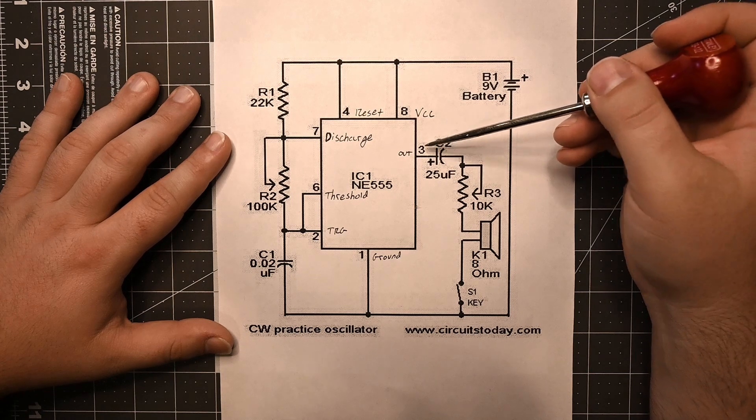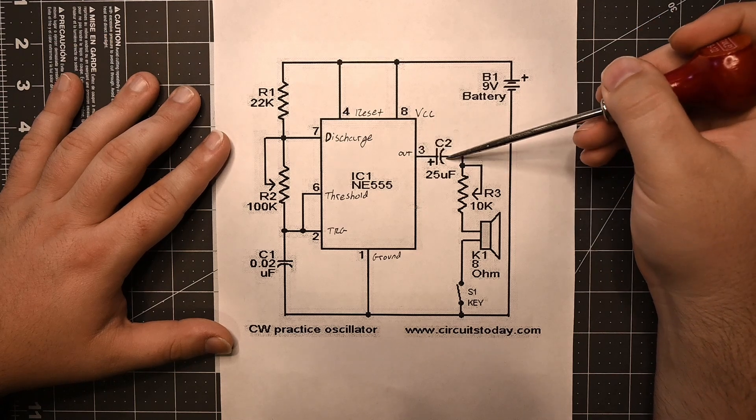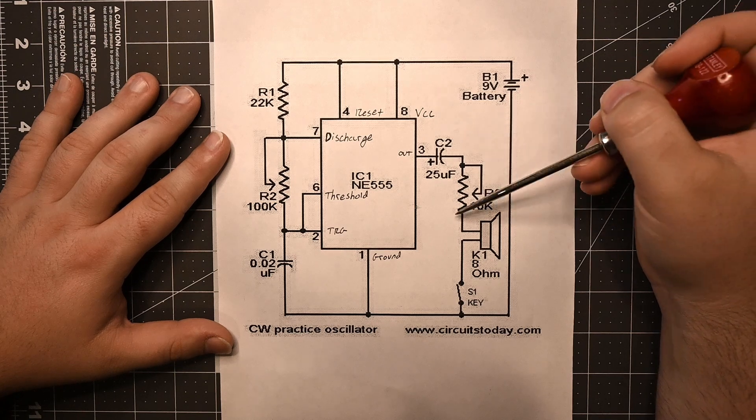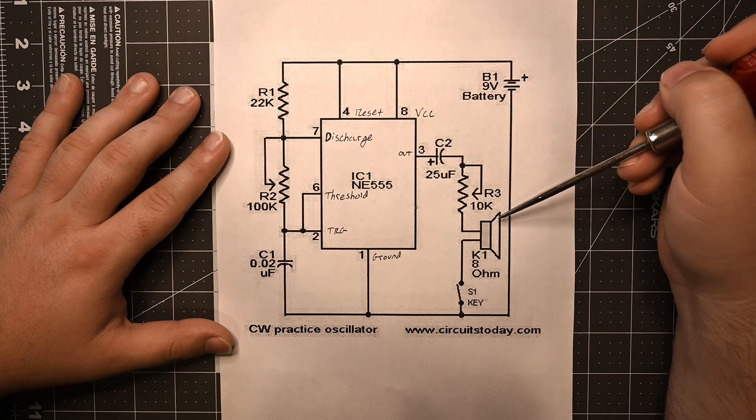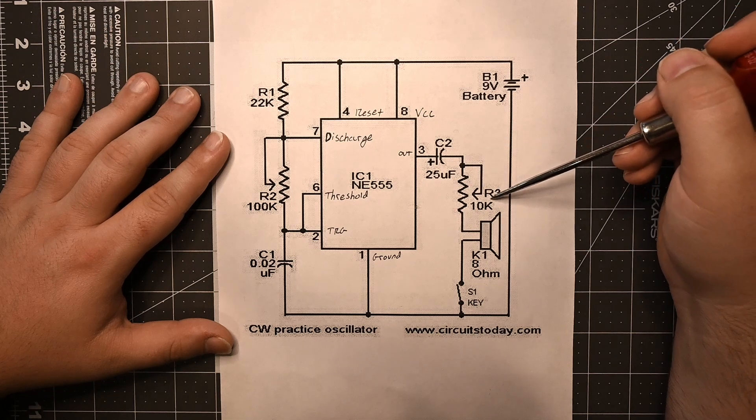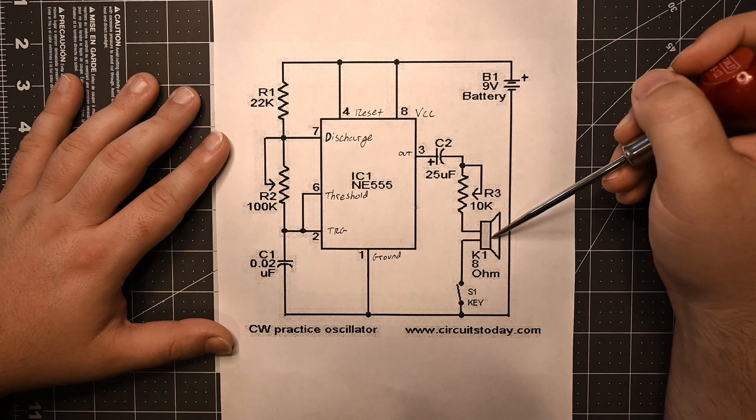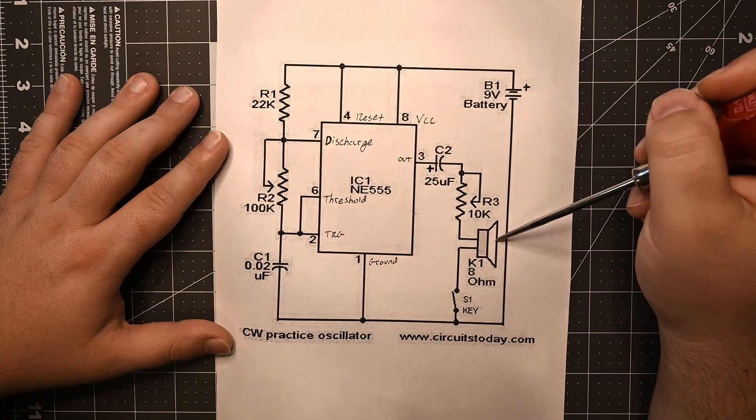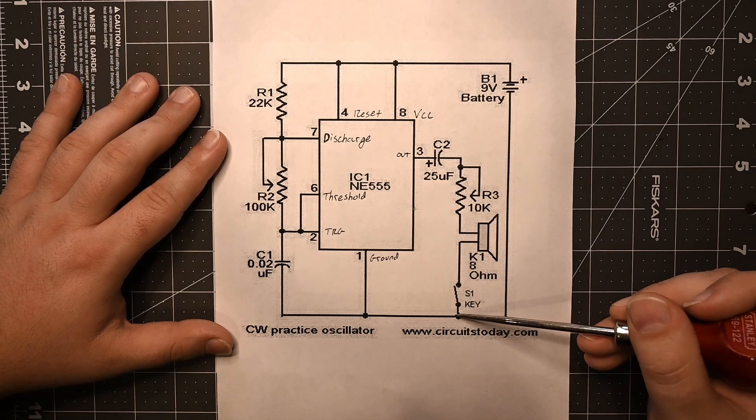So pin 3, like I say, is the output. This is going to oscillate high and off, high and low. And the first thing we want to do is pass it through a capacitor, in our case, this is an electrolytic capacitor, which is going to make the voltage positive and negative, which is what you need to actually operate the speaker. Then it's going to go through another potentiometer. The schematic here shows 10k. I wind up using 5k in my version, but we'll see that. And this controls the volume.